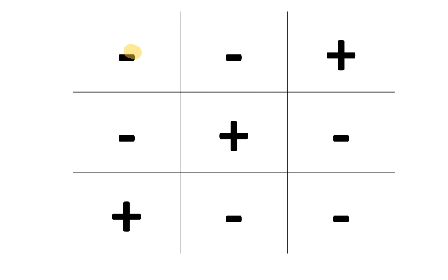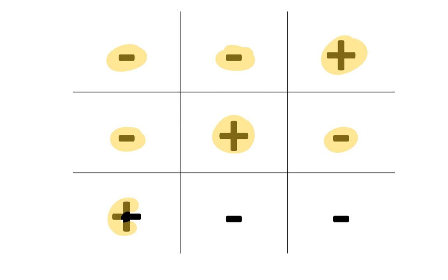A negative number multiplied by a negative number gives you a positive number. Meanwhile, a negative number multiplied by a positive number gives you a negative number. And a positive number multiplied by a negative number gives you a negative number.